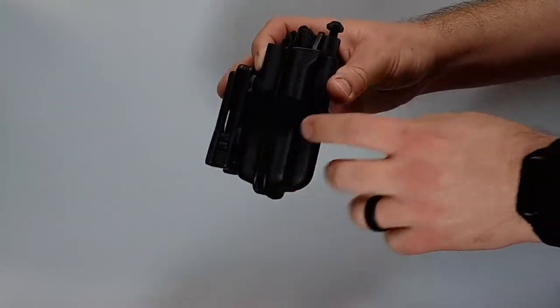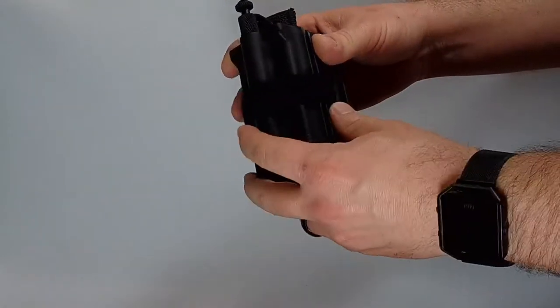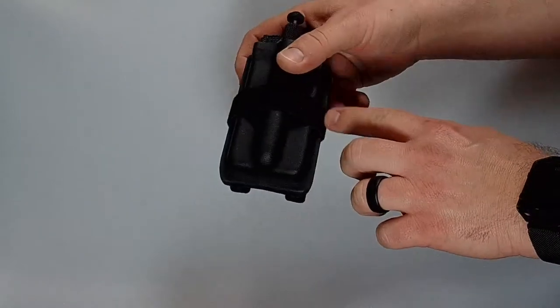The retention is built with this hook and loop material that goes all the way around it, and it will tuck behind whatever your mounting options are to make sure that it doesn't get snagged.